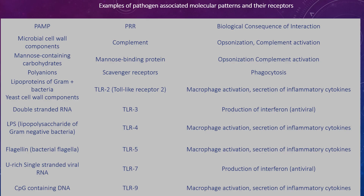Examples of pathogen-associated molecular patterns and their receptors include: microbial cell wall components, mannose-containing carbohydrates, polyanions, lipoproteins, double-stranded RNA, LPS, and flagellin. The corresponding PRRs include complement, mannose-binding protein, and TLR3. The biological consequences of their interactions include opsonisation, complement activation, phagocytosis, macrophage activation, interferon production, and secretion of inflammatory cytokines.